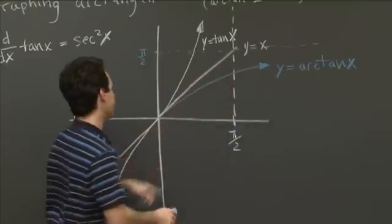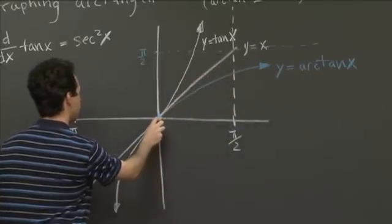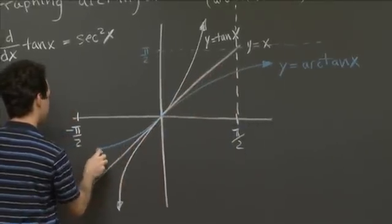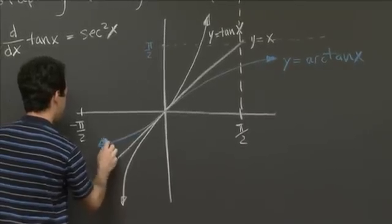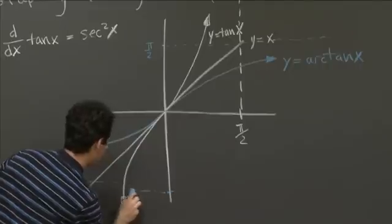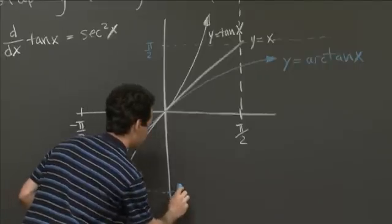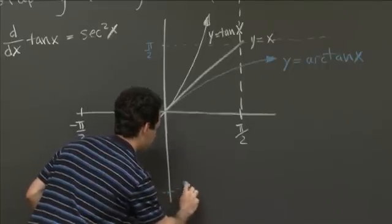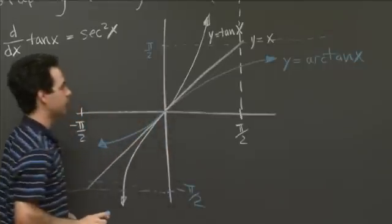So it'll come below that line. And similarly, over here, it'll be the reflection. So it'll come above that line. And again, it has a horizontal asymptote at minus pi over 2.